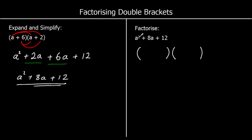The a squared comes from a times a, so we have an a in both of the brackets. The positive 12 came from our 6 times our 2 — our two numbers multiplied together. And our 8a came from our 6 and our 2 added together. So 8 is 6 plus 2, and 12 is 6 times 2.